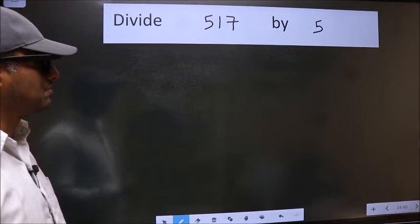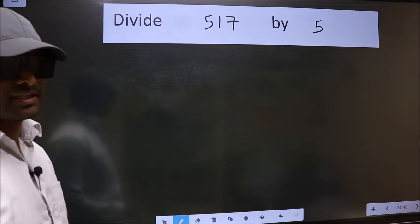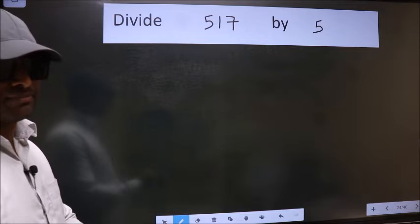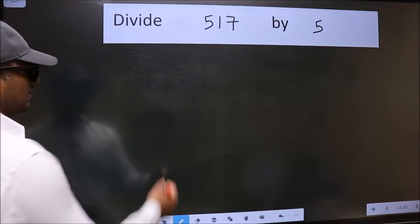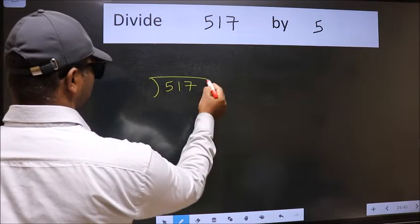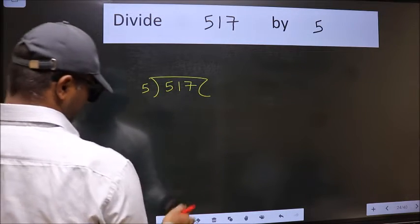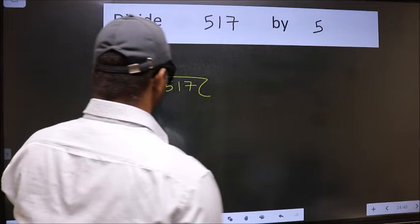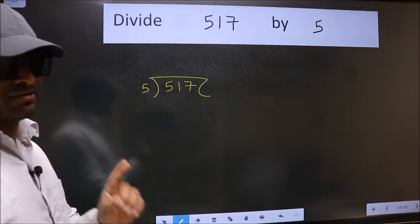Divide 517 by 5. To do this division, we should frame it in this way. 517 here and 5 here. This is your step 1.